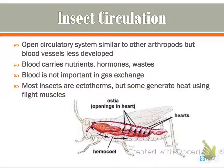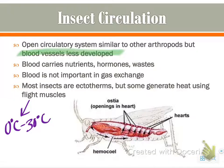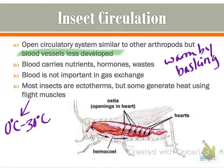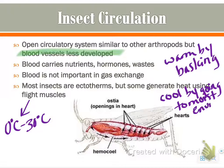Insect circulation relates back to the hemocoel that all arthropods share — they have an open circulatory system with less developed blood vessels. The blood carries nutrients, hormones, and waste, and is not important in gas exchange. Most insects are ectotherms, but some generate heat using flight muscles — from zero to 30 degrees Celsius. They warm themselves by basking in the sun, and cool by going to moist environments. Honeybees, for example, actually heat their hive using their wings.